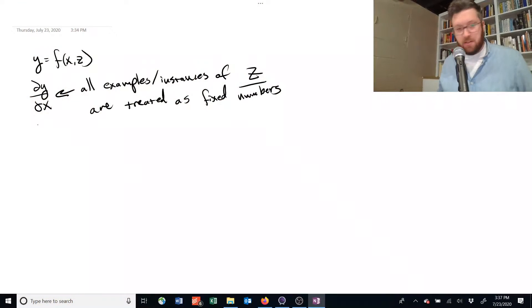So let's look at a simple example. Suppose that y is equal to x squared plus x times z plus z squared, and we want to find the partial derivative with respect to x.